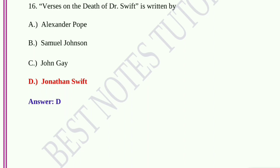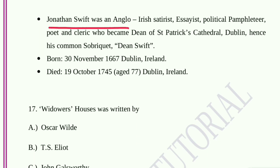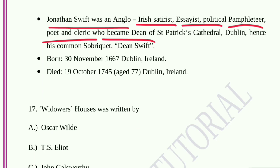Question number sixteen: 'Verses on the Death of Dr. Swift' is written by option A, Alexander Pope; option B, Samuel Johnson; option C, John Gay; option D, Jonathan Swift. Option D, Jonathan Swift, is the correct answer. Jonathan Swift was an Anglo-Irish satirist, essayist, political pamphleteer, poet, and cleric who became Dean of St. Patrick's Cathedral, Dublin — hence his common sobriquet, Dean Swift. He was born on 30th November 1667 in Dublin, Ireland, and died on 19th October 1745 at the age of 77.